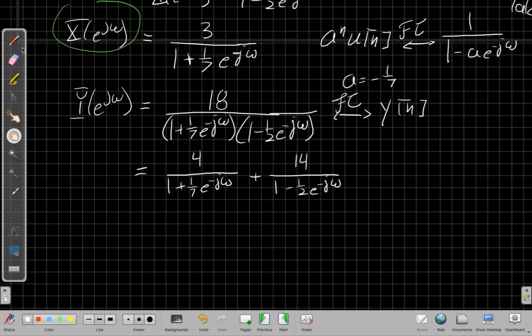Now I'm lined up for landing on the inverse Fourier transform. I've got a sum of two things that are just scaled versions of something that looks like this for two different values of a. For this one, a = -1/7, and for this term here, a = +1/2.